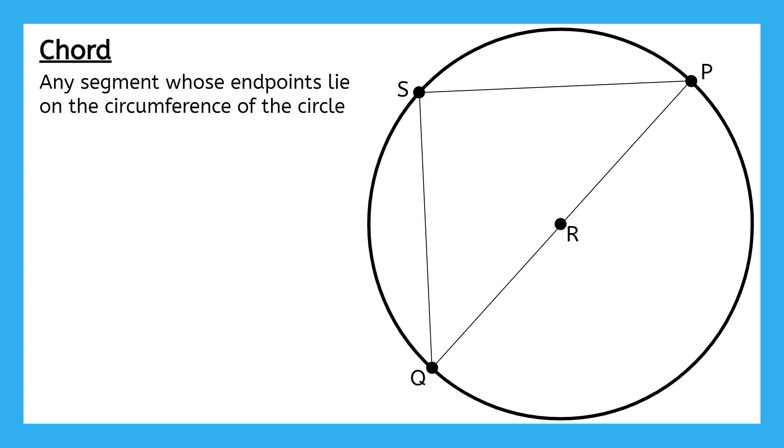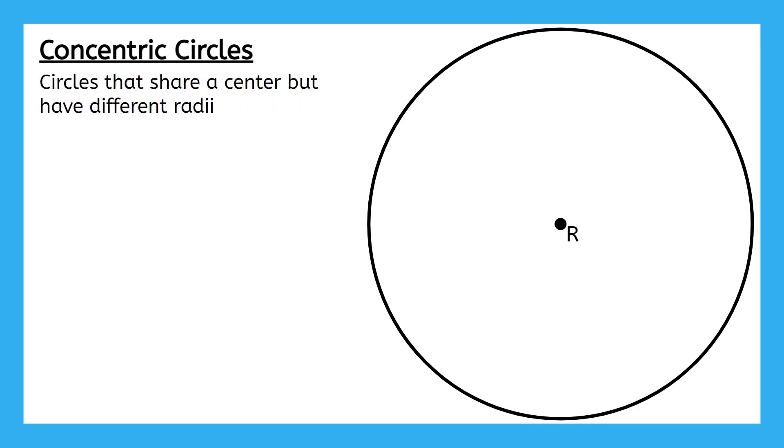Alright, let's zoom out a little here so we can talk about something called concentric circles. These are circles that share a center, but have different radii. So here's the circle we've been working with this whole time. We can call it circle R, since we name circles based on their center.